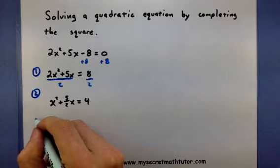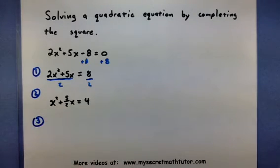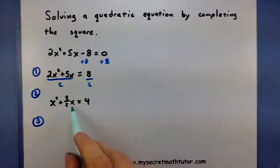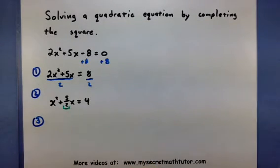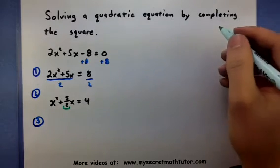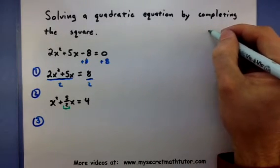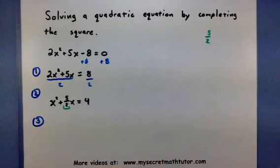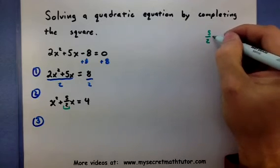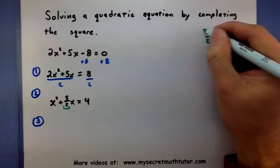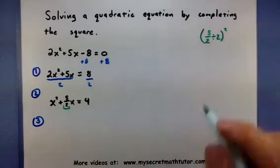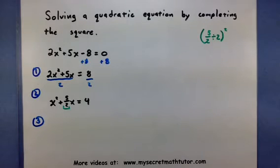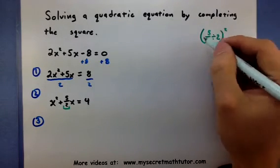But now we get to that step where I said I was going to find a magic number. Now in order to find this number, look for the coefficient in front of x, this guy, and go off on some scratch paper here. So maybe up in the corner, I'm going to write 5 halves. What you want to do with this number is to divide it by 2 and square it.